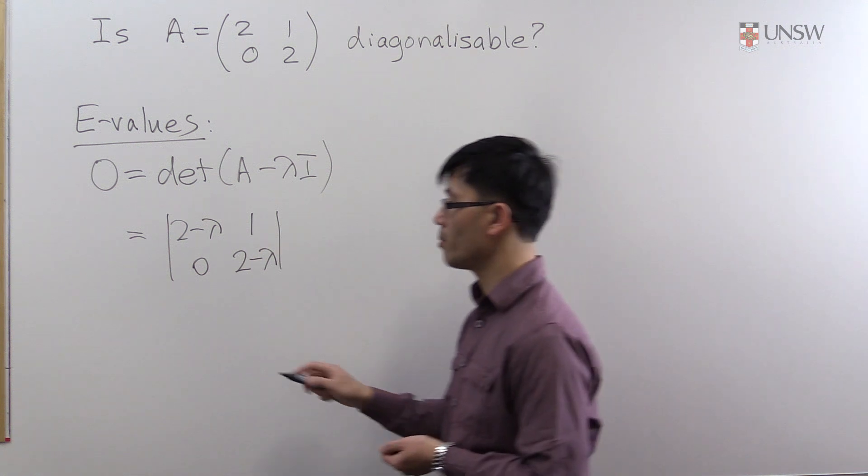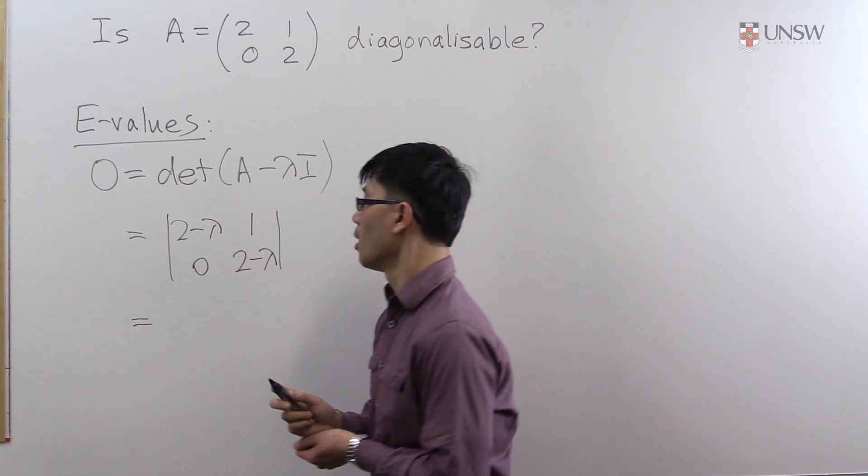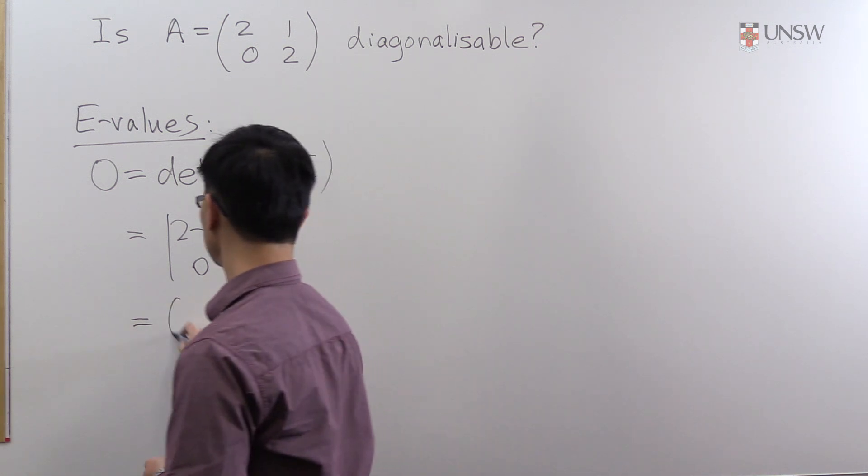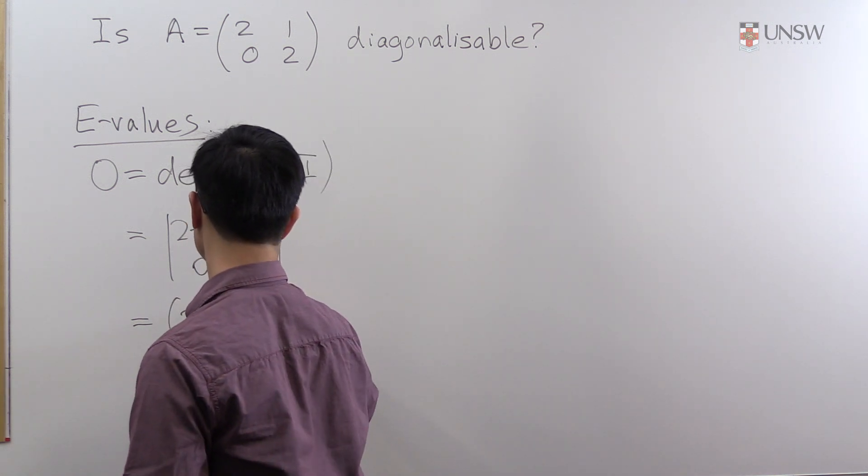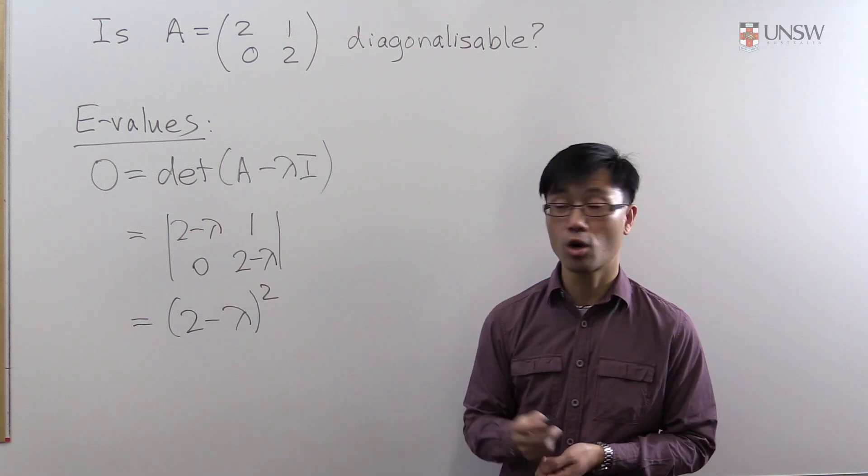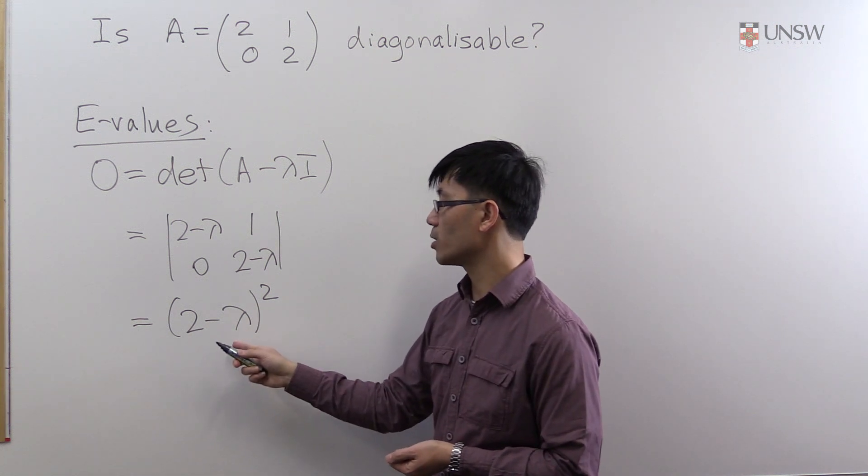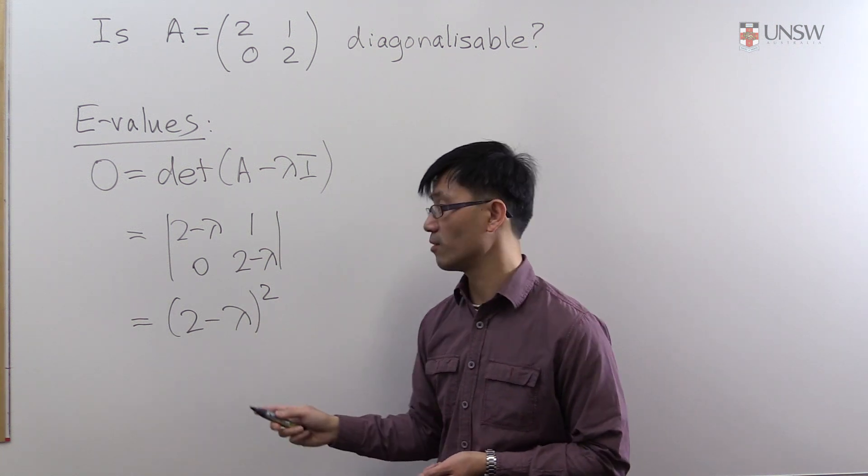So to compute this determinant, this is actually upper triangular so you just have to multiply the diagonal entries. So that's just (2 - λ)². And of course for this to equal zero, each of the factors has to equal zero, and since there's a repeated root here we'll find there's only one eigenvalue.